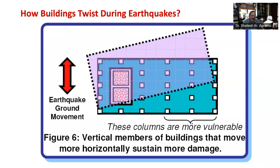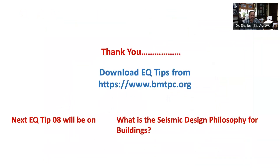If this twist cannot be avoided due to functional requirements, special calculations need to be done to account for the additional shear force arising due to twisting in the design of the buildings. IS 1893, the seismic code, has made provisions for such calculations. Please remember as a parting note that buildings with twist — that is, unsymmetrical buildings — will perform poorly during earthquake shaking. This is all about twisting of buildings during earthquakes.